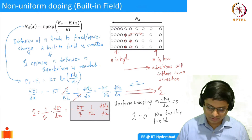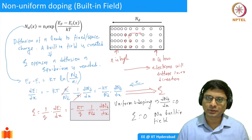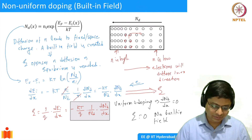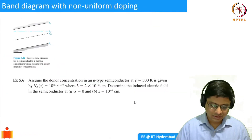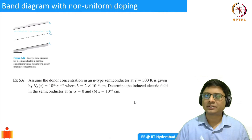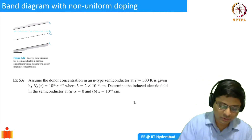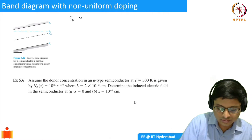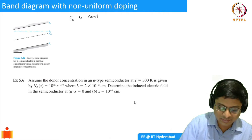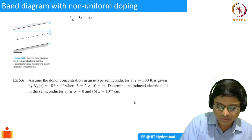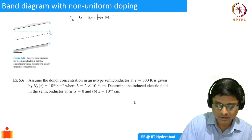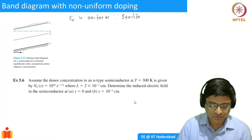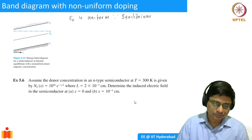Let's take an example. Consider what the band diagram looks like when you have non-uniform doping. Since it's a system in equilibrium, E_F is going to be constant — E_F is uniform because the sample is in equilibrium, so it has to be constant.